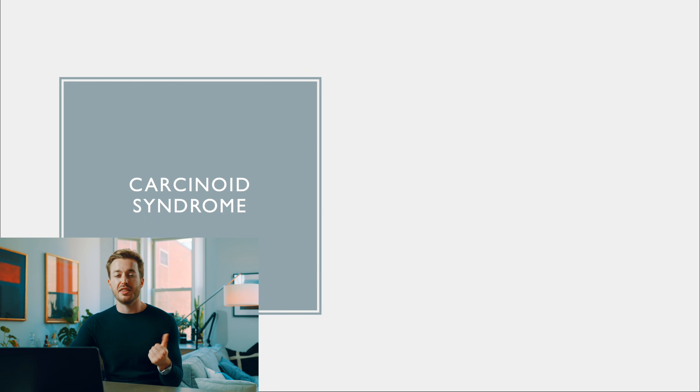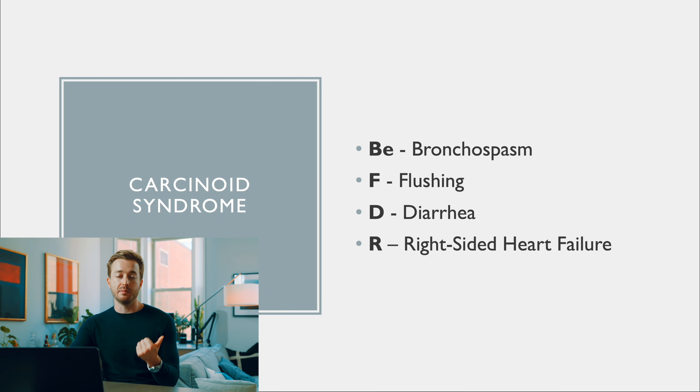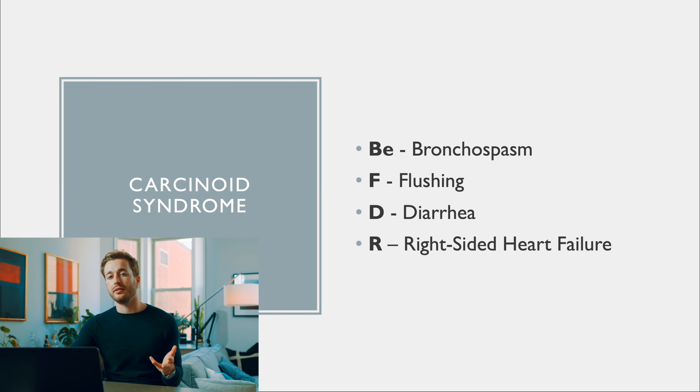The next mnemonic covers carcinoid syndrome — a rare tumor that produces excess serotonin, causing various effects. The mnemonic is BFDR: B is bronchospasms, F is flushing, D is diarrhea, and R is right-sided heart failure.